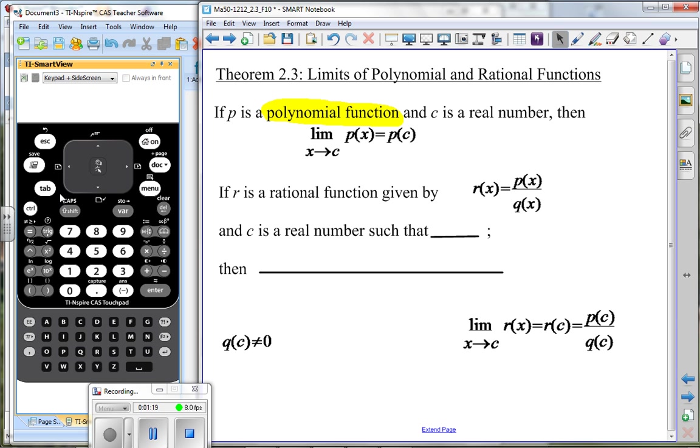Rational functions, you know, the first four or five letters is ratio, which is then a fraction. And c is a real number such that, well, if this is a rational number, we have to make sure that our denominator does not equal zero. So such that q of c does not equal zero.